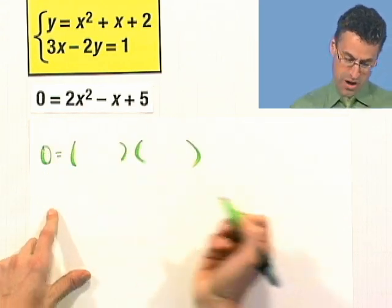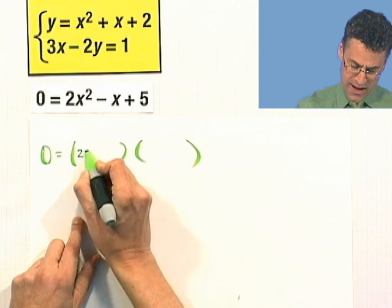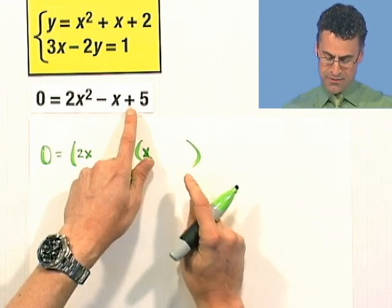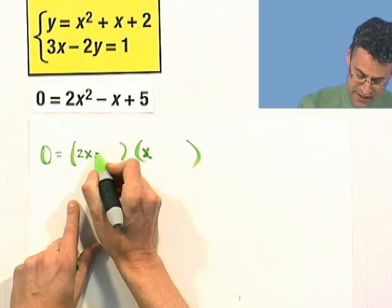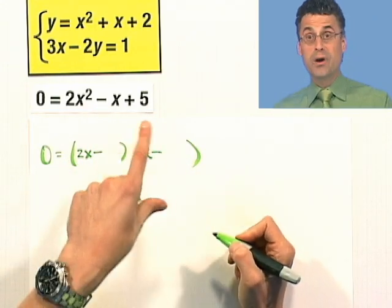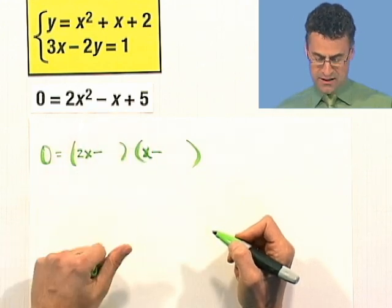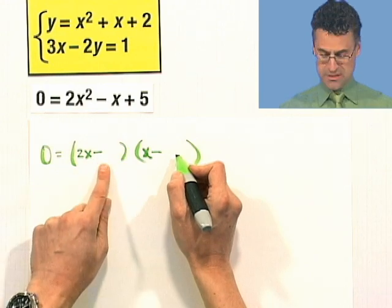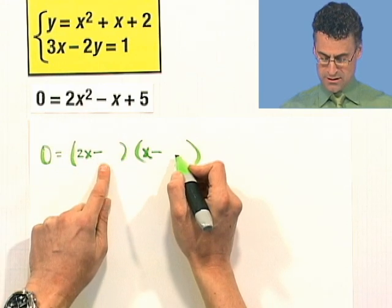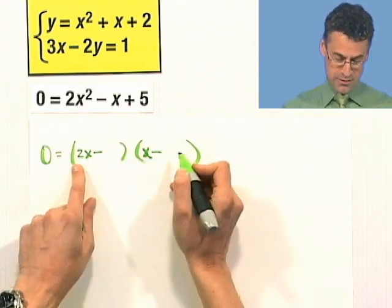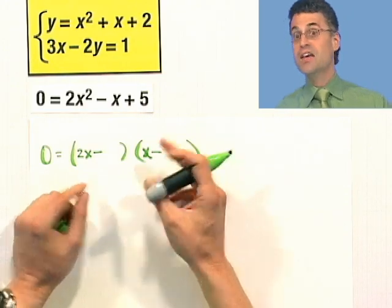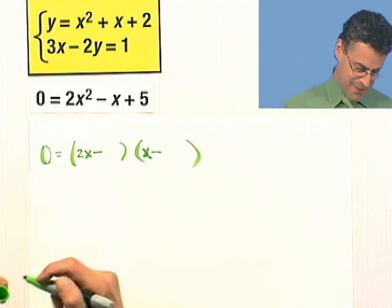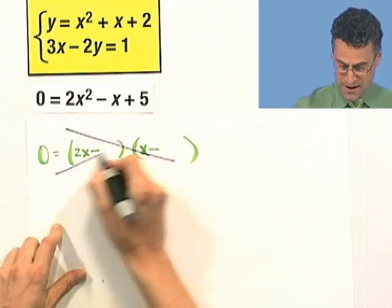I'll put a 2x here and an x here. I want the product, so these guys have to have the same sign. They're both negative. Product has to be 5 and they have to add to give negative 1. 5 and 1, that doesn't work. This can't be factored. You know what we have to do? And this happens in life every once in a while. Not factorable. We've got to actually use the quadratic formula.